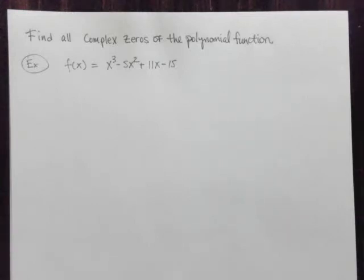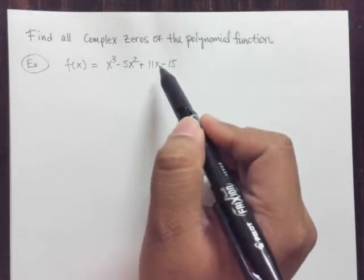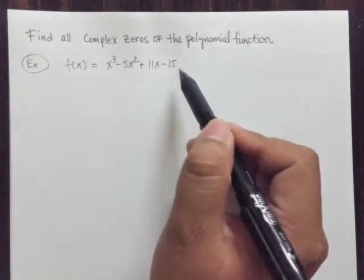So in this example, we are asked to find all the complex zeros of the given polynomial function. We have f(x) equals x cubed minus 5x squared plus 11x minus 15.